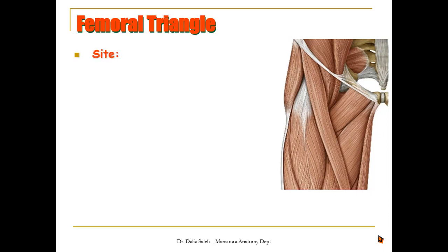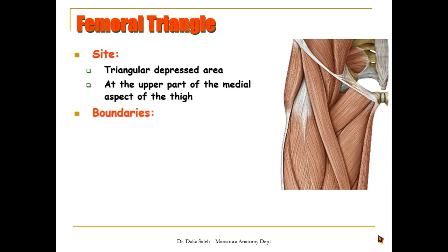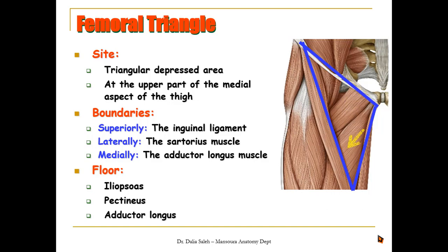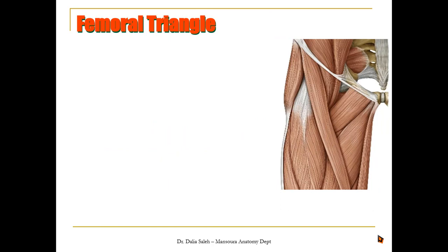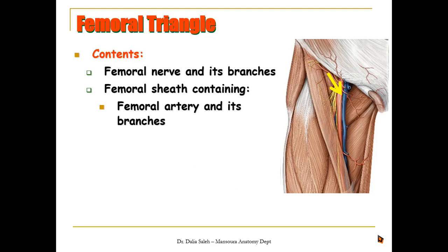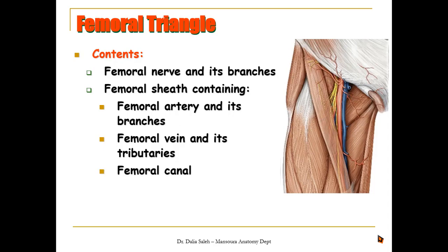The femoral triangle is a triangular depressed area at the upper part of the medial aspect of the thigh. It is bounded superiorly by the inguinal ligament, laterally by the sartorius muscle, and medially by the adductor longus muscle. Its floor is formed by the iliopsoas, the pectineus, and the adductor longus muscle. It contains the femoral nerve and its branches, the femoral sheath — which contains the femoral artery and its branches, the femoral vein and its tributaries — and medial to this lies the femoral canal, which is an empty space containing fat and lymph nodes.